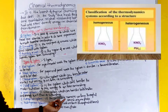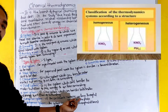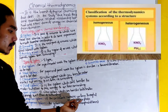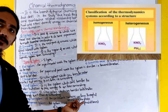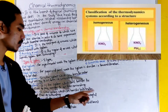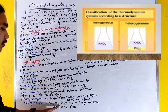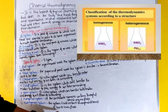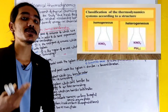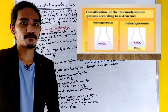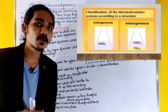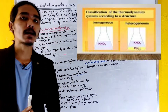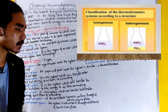A homogeneous system is one in which the constituent remains uniform throughout and consists of only one phase. This is a phase, and this is uniform. There is also a phase of two phases, and the phase boundary is the phase system.